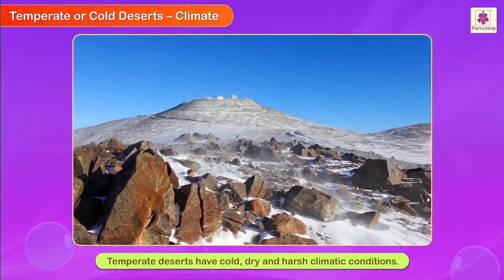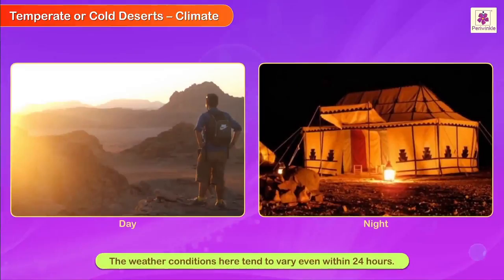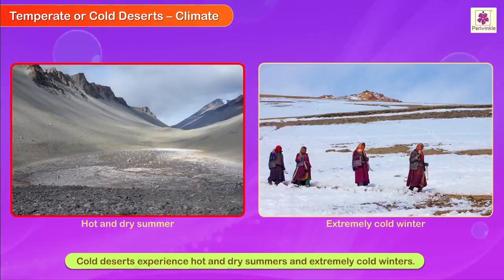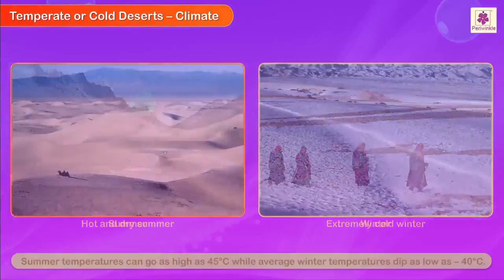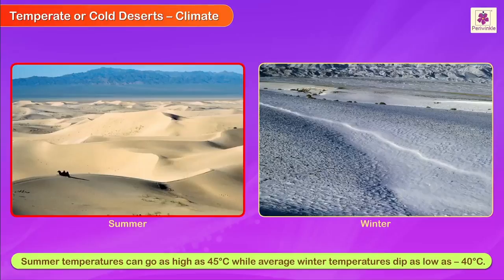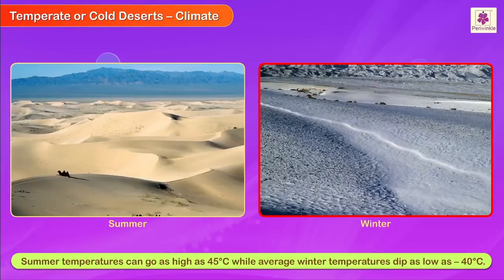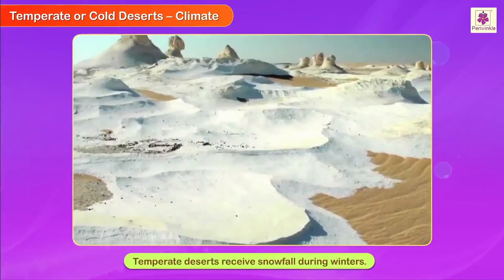Climate: Temperate deserts have cold, dry, and harsh climatic conditions. The weather conditions here tend to vary even within 24 hours. Cold deserts experience hot and dry summers and extremely cold winters. Summer temperatures can go as high as 45 degrees Celsius, while average winter temperatures dip as low as minus 40 degrees Celsius. Temperate deserts receive snowfall during winters.